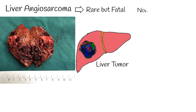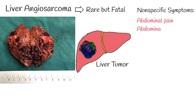Liver angiosarcoma has very non-specific and vague symptoms, so you cannot suspect it based on symptoms alone. The most common symptoms are abdominal pain and abdominal distension, which occurs when air, fluid, or mass accumulates in the body and causes its expansion.